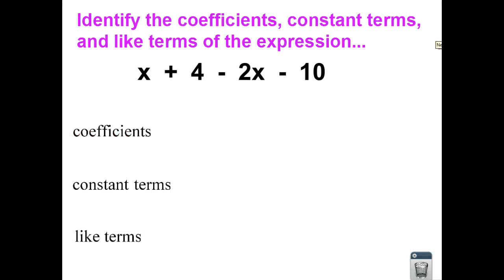All right, this is an algebraic expression. It's an expression because we don't have an equal sign. If it had an equal sign, we would be calling this an equation. So right now, we're going to talk about certain parts of this number sentence. Again, we don't have an equal sign, better known as an expression.